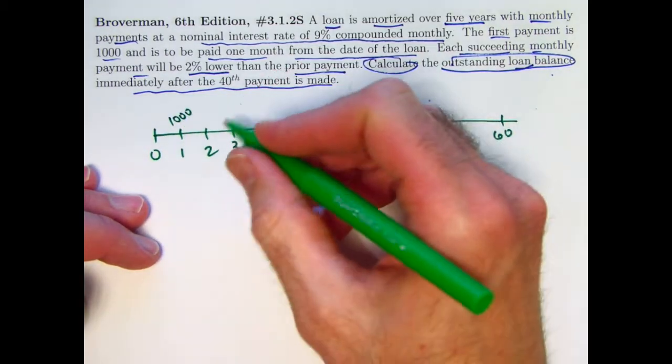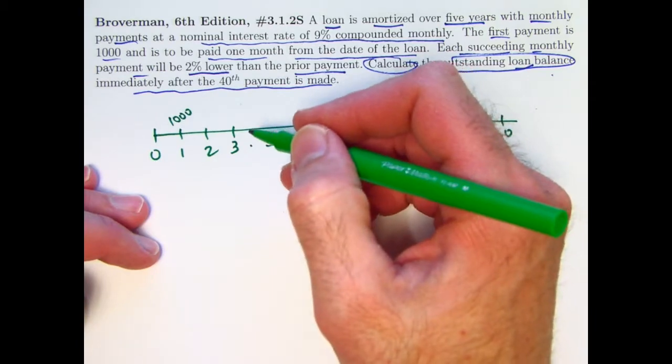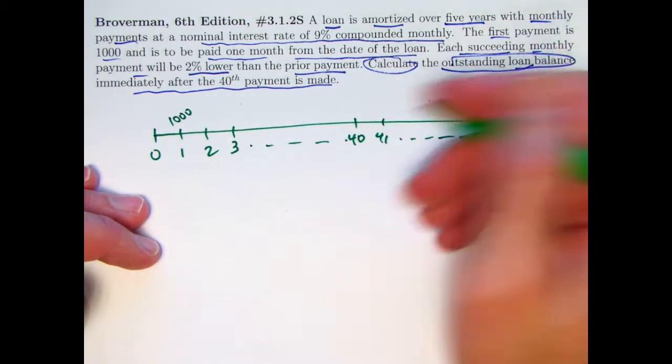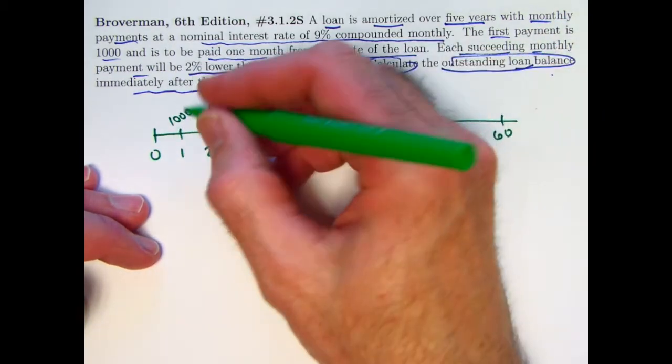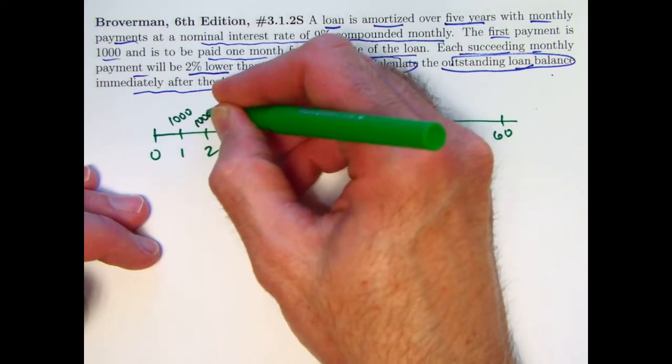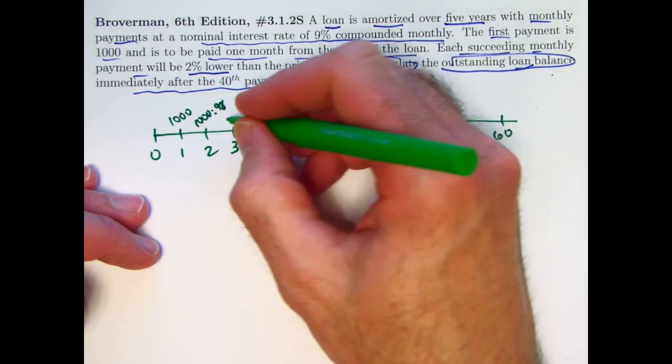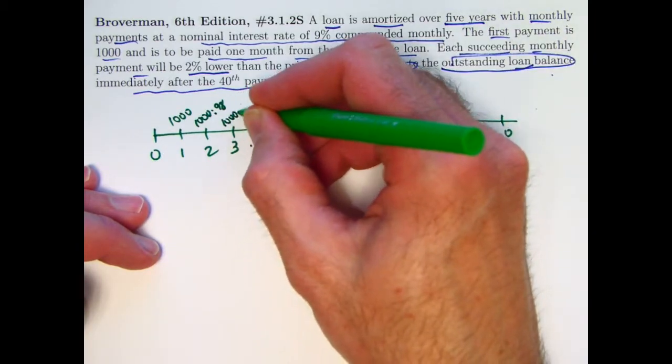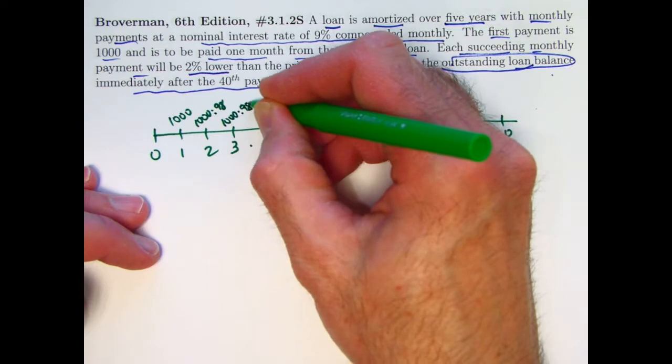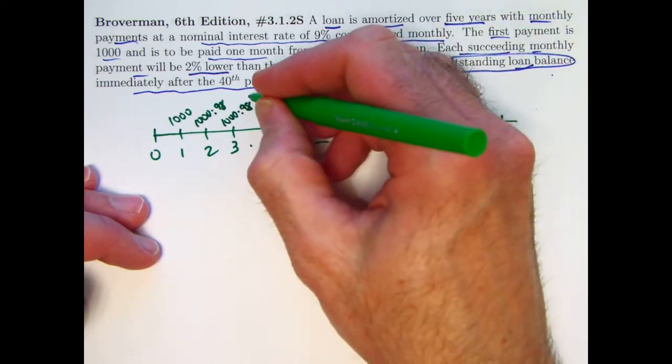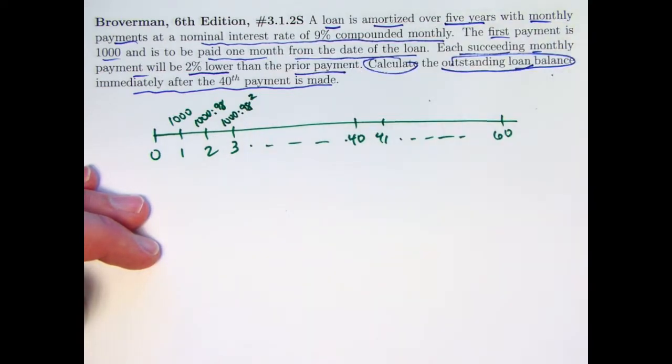The first payment of $1,000 is at time 1. The second payment is 2% lower than that, 98% of that, which would be 980. Let's write that instead as $1,000 times 0.98. The third payment at time 3 will be $1,000 times 0.98 times 0.98. In other words, $1,000 times 0.98 squared. The next one would be $1,000 times 0.98 cubed.